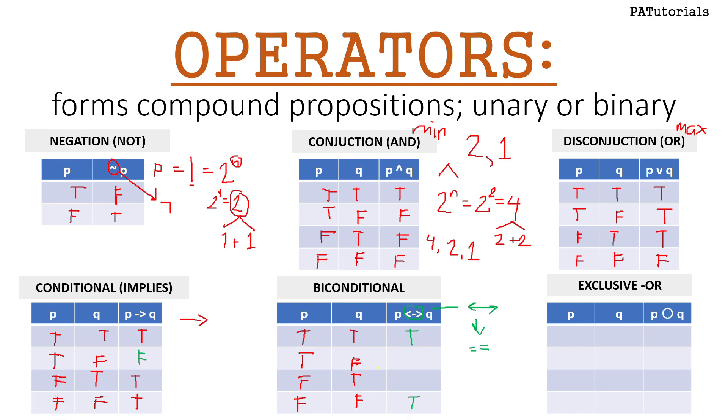When the two sides are not the same, you get false values. So when they are equal it is equivalent to true; when they are not, it is false.